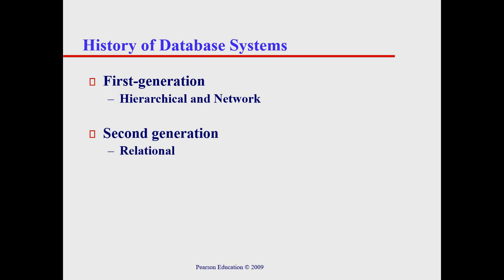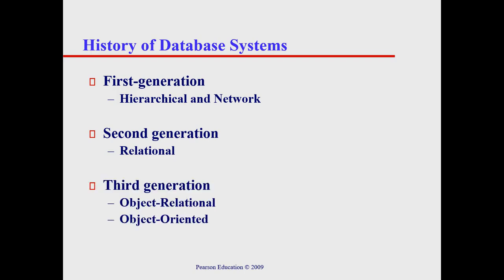Looking at the history of database systems: the first generation were hierarchical and network database systems. The second generation are relational database systems, which are what we use today. Although we also have the third generation, which is object-oriented or object-relational.